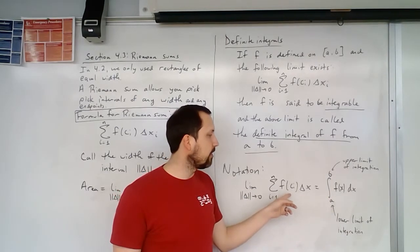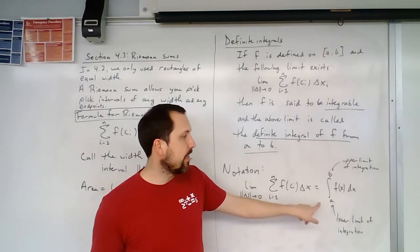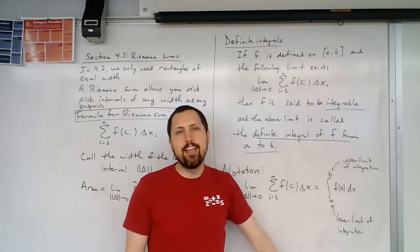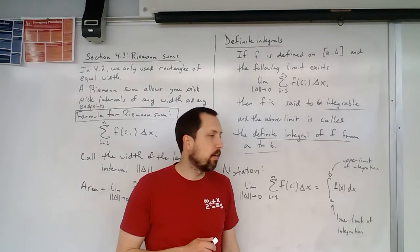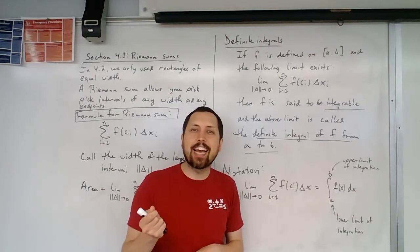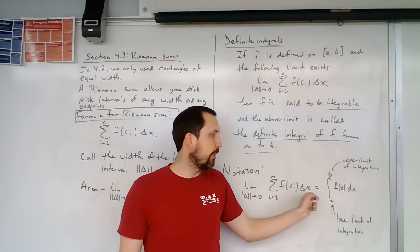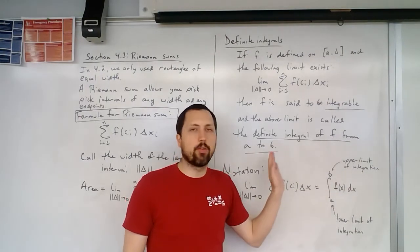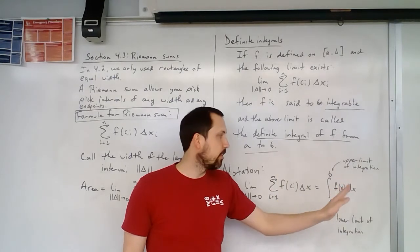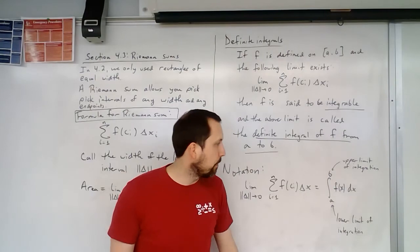The F of C sub I, this just becomes F of X. X is going to be just some variable. And then the delta X is going to become DX. Now, we saw that before when we looked at differentials. Remember, we had this delta X and DX up here, and we had the delta Y, DY. So we've seen this notation before, and so this is how taking a limit of this helps us see this notation appear.